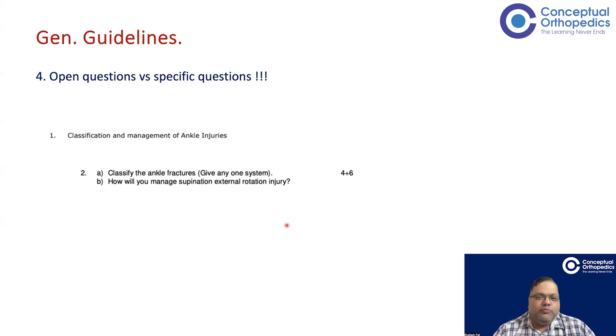The next question is for six marks. How will you manage supination external rotation injury? Again, a very, very, very specific question. Again, management includes investigation and treatment. You are going to get x-rays, you are going to get CT scans. Initially you may require to put on a spanning external fixator. And once you do that, depending on what fractures he has. So for lateral malleolar fractures, posterior malleolar fractures, medial malleolar fractures, and anterior malleolar fractures, you are going to divide your answer into that. And again, a flowchart makes things much easier. So look into, again, open or specific. Most likely they are specific.